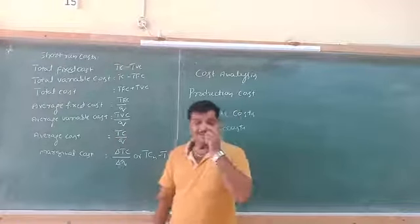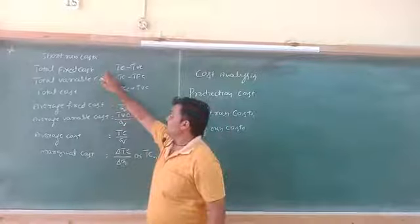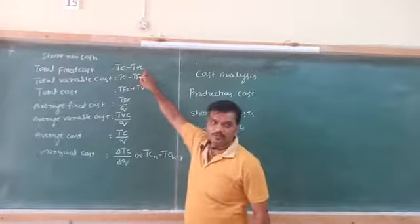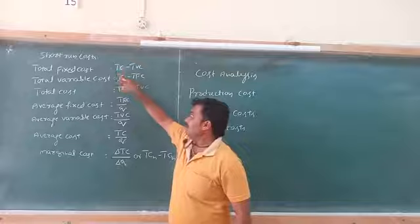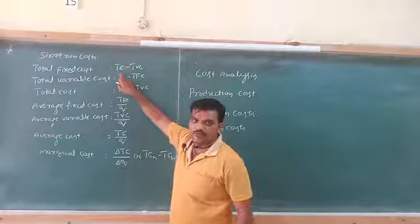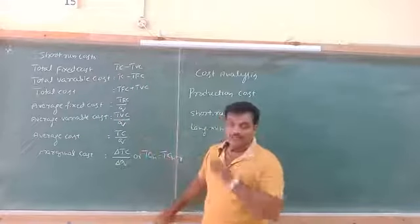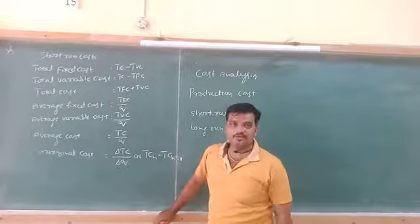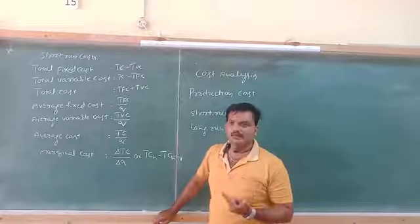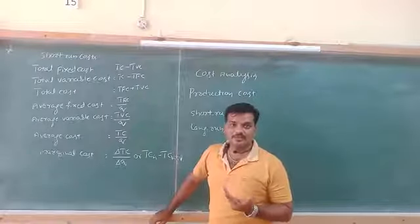How can we determine Total Fixed Cost? It can be determined using the formula: TC minus TVC. That means when we deduct Total Variable Cost from Total Cost, we get Total Fixed Cost. Examples of fixed costs include insurance premium, rent of building, and salary to permanent workers.